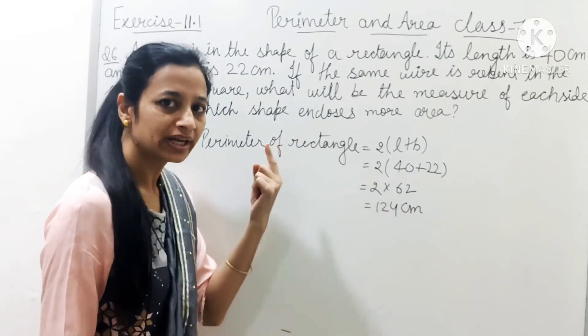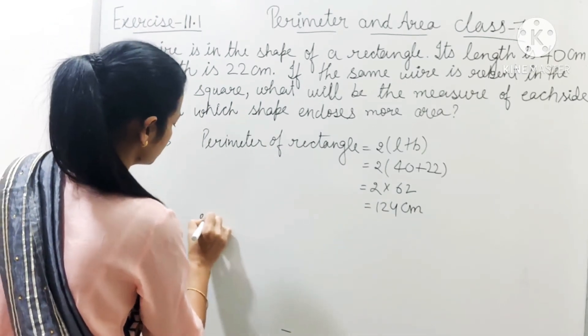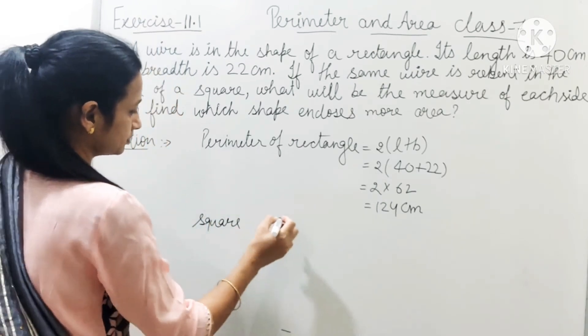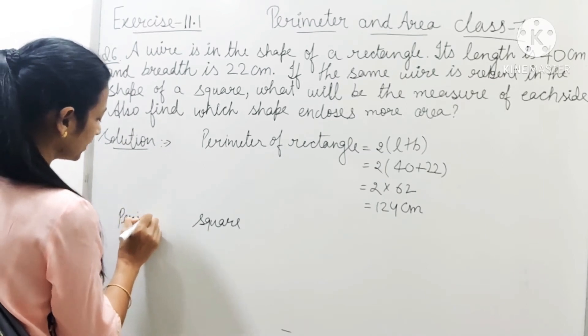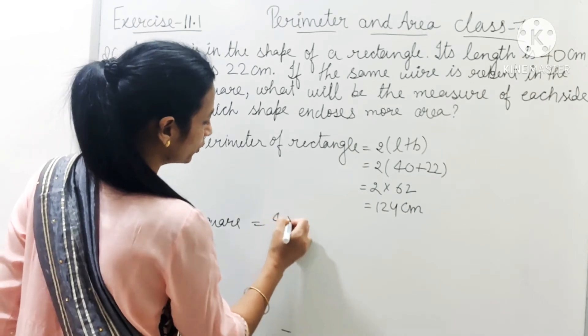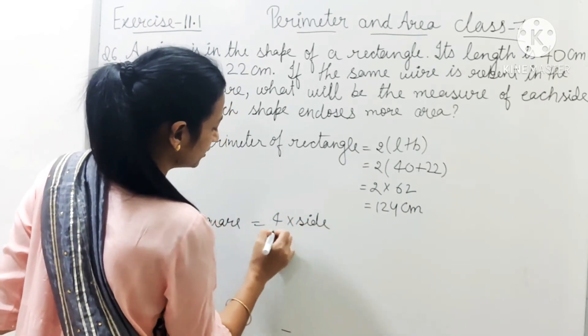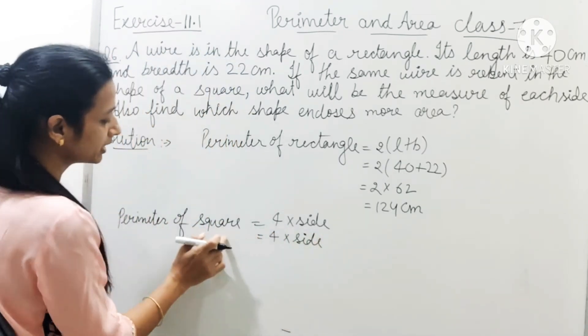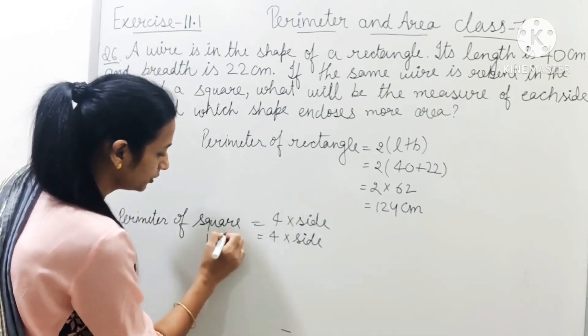Now we can find the square side. Perimeter of square equals to 4 into side. And here perimeter we will take 124.